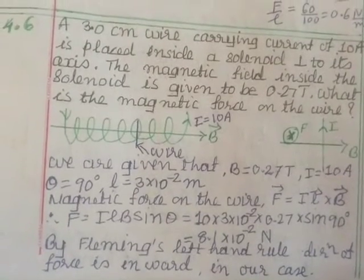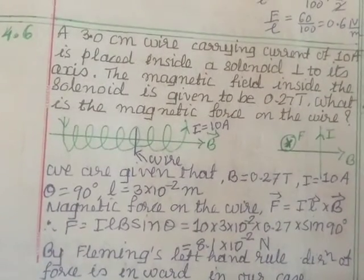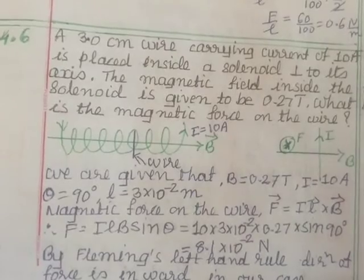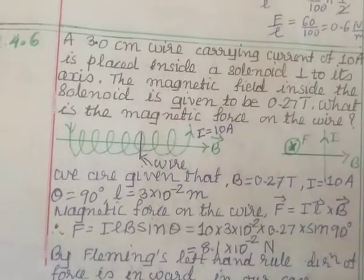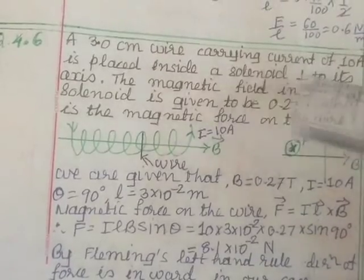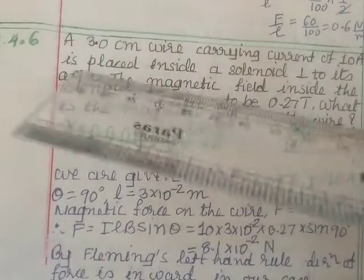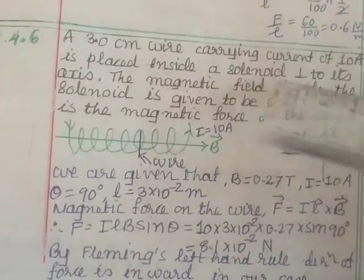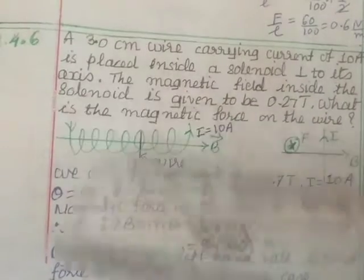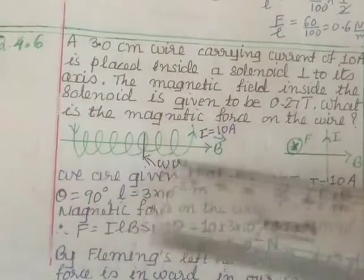Physics class 12, chapter 4: Moving Charges and Magnetism, exercise question number 4.6. A 3 centimeter wire carrying current of 10 amperes is placed inside a solenoid perpendicular to its axis. So this is a solenoid, this is the axis.